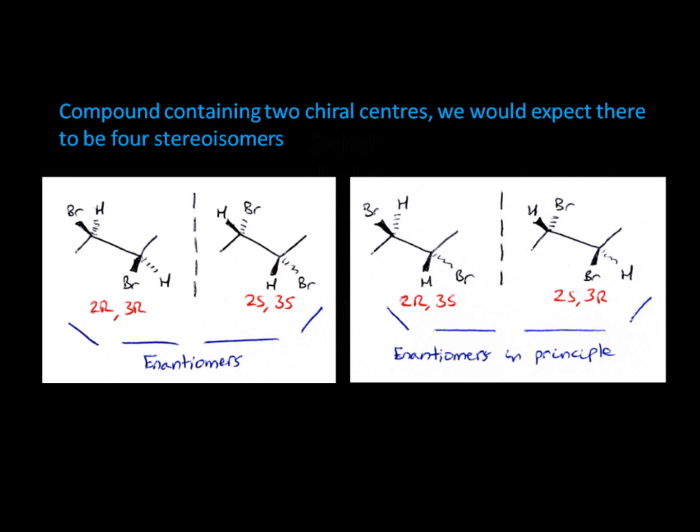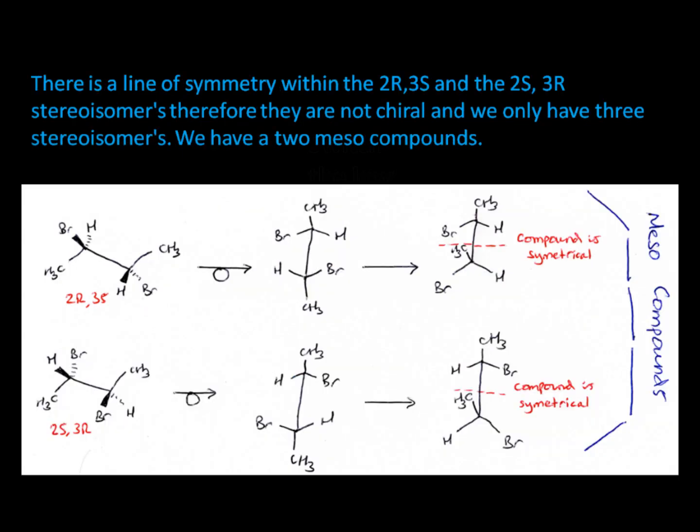If we look at this compound here, we would expect it to have four stereoisomers due to it containing two chiral centres. However, if we look more closely, we can see that there is a line of symmetry within the 2R3S and the 2S3R stereoisomers. Therefore, it is not chiral, and we only have three stereoisomers. We have a mesocompound, which can be defined as a stereoisomer of a compound which has a chiral stereoisomer that has a mirror plane of symmetry.